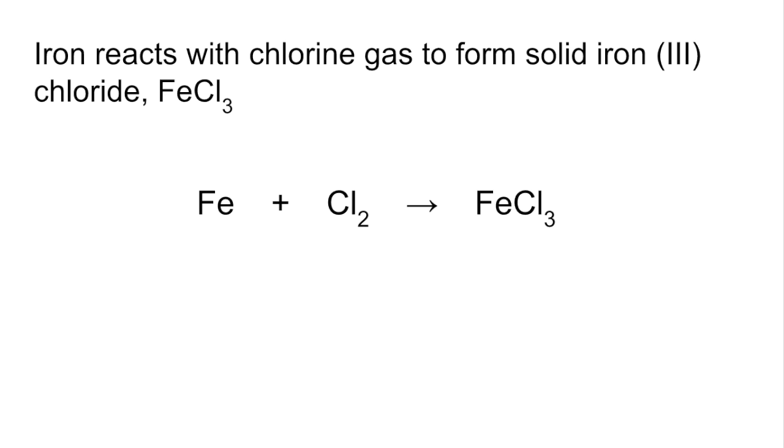So balancing that now, there's the numbers there. So two Fe's, three Cl2s, two FeCl3s. So you can see two Fe's, two Fe's, three Cl2s. So that's six Cls on the left, two threes, six on the right.